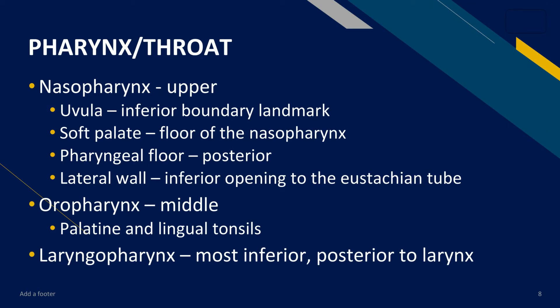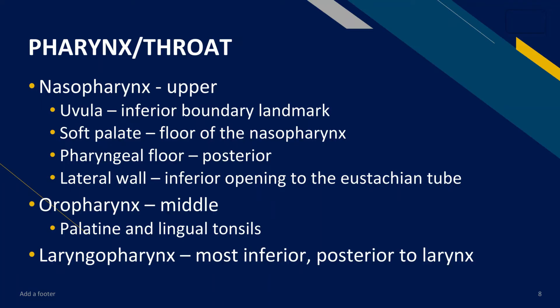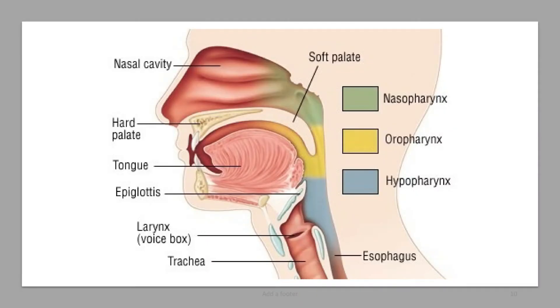The pharynx, or throat, is the tube that delivers air from your mouth and nose to your trachea or windpipe. The pharynx has three parts: the nasopharynx, which is the upper portion; the oropharynx, which is the middle portion; and the laryngopharynx, which is the most inferior and is posterior to your larynx. The nasopharynx is divided into four landmarks: the uvula, the soft palate, the pharyngeal floor, and the lateral wall with the inferior opening to the eustachian tube.